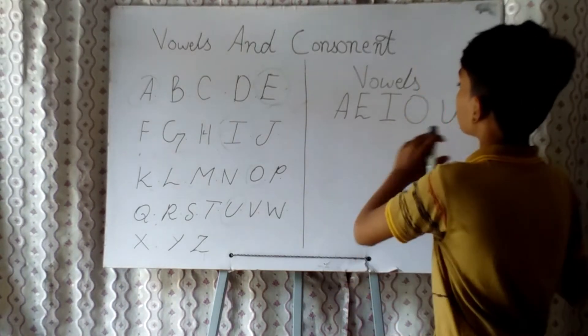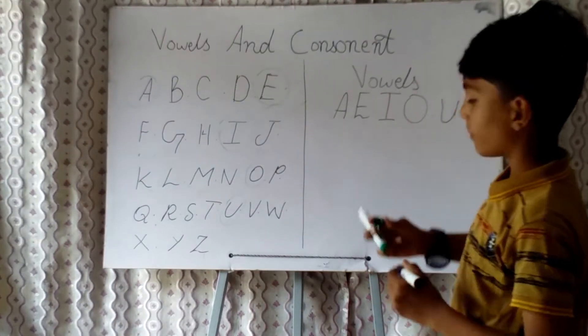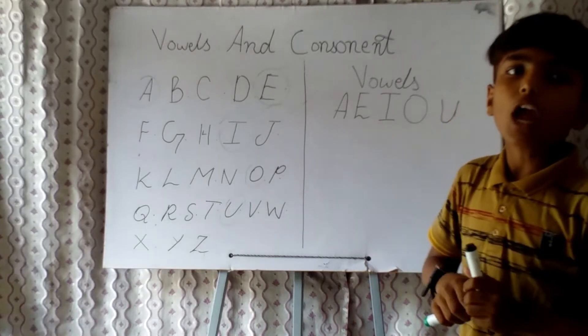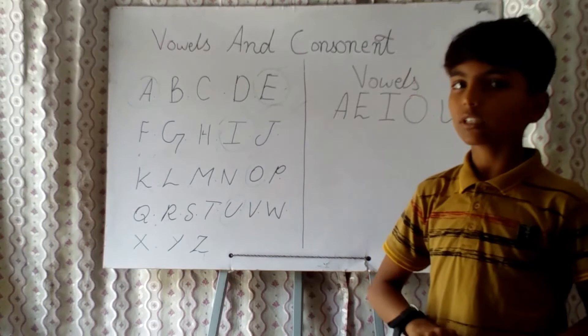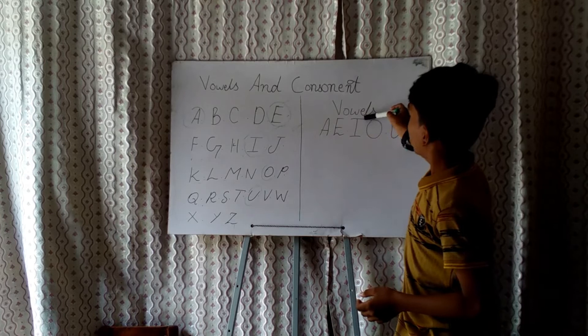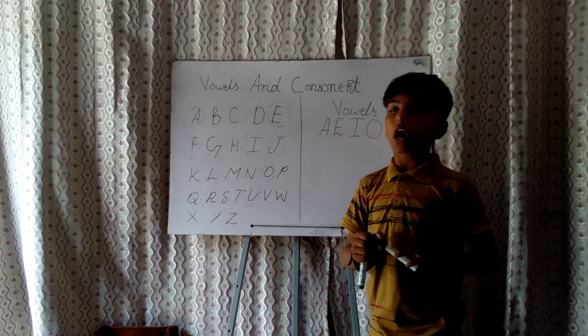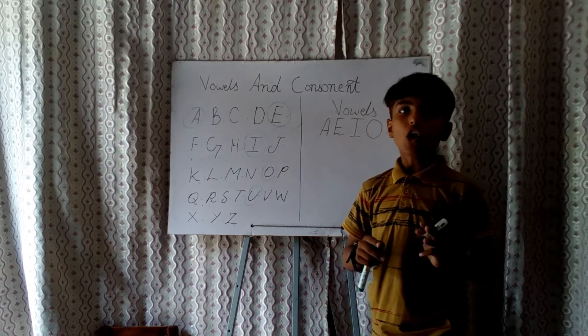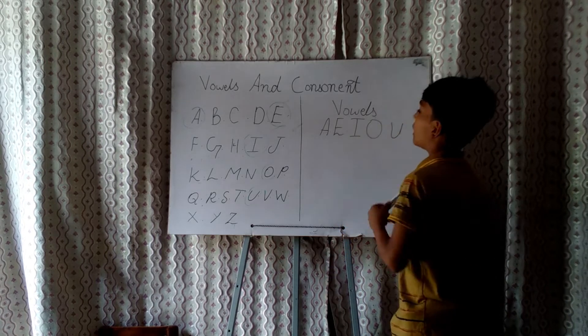So these are vowels in English language. There are five vowels in English language. What is the importance of vowels? Anyone can't make words without vowels. They are A, E, I, O, and U. When we pronounce them, we don't touch our lips like A, E, I, O, U. For example, I'm giving examples of vowels.